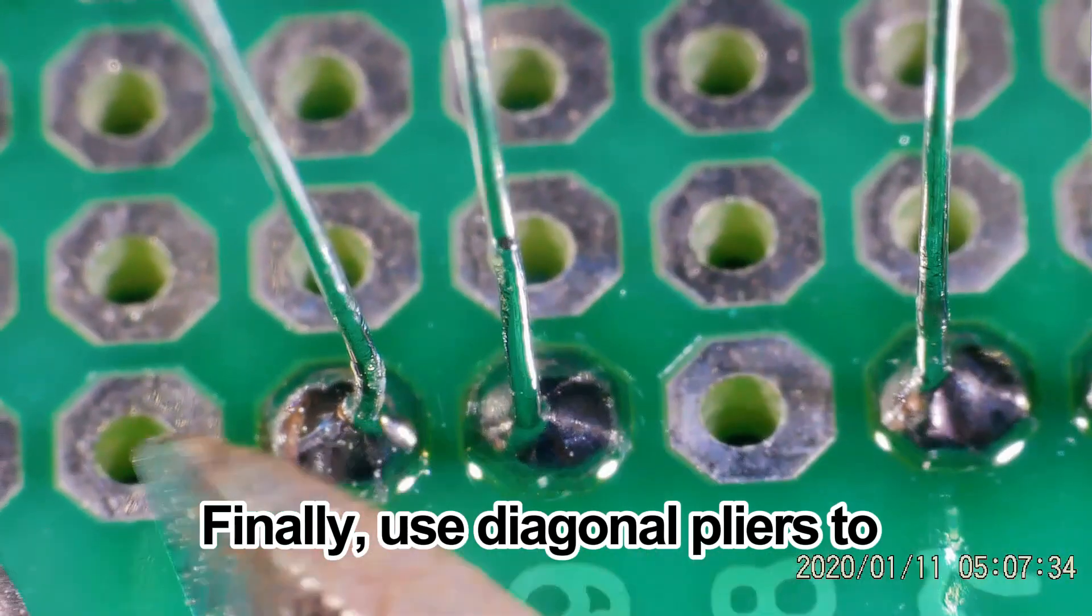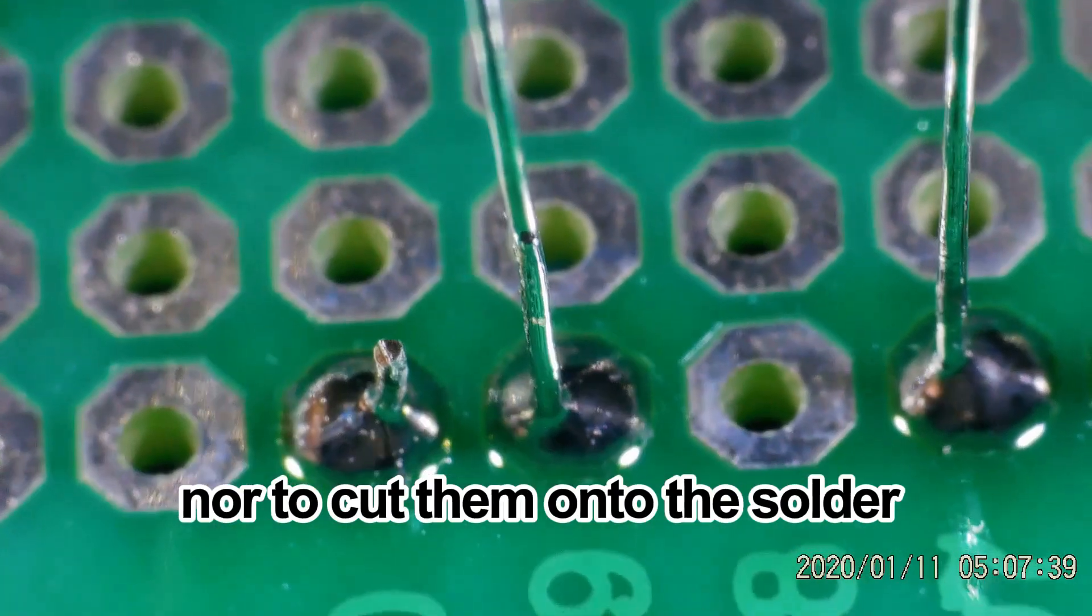Finally, use diagonal pliers to cut off the excess pins. Be careful not to pull or cut them, nor to cut them onto the solder to prevent cracking or detachment of the solder joint.